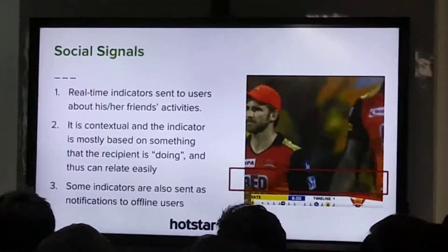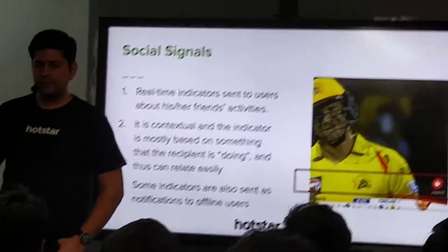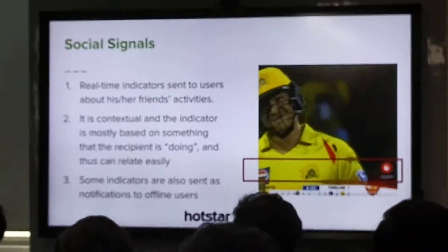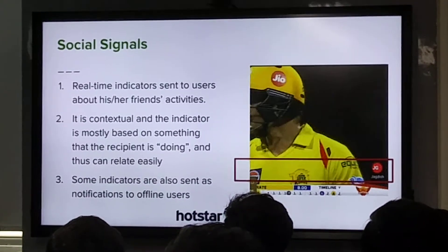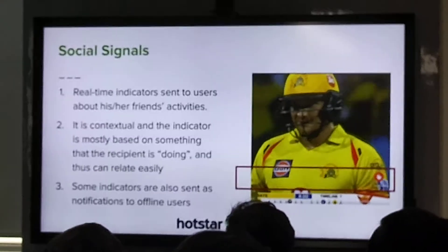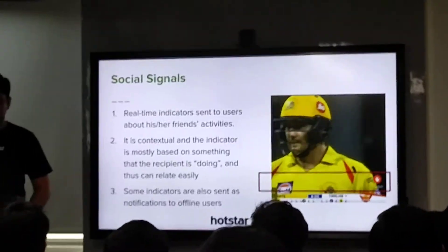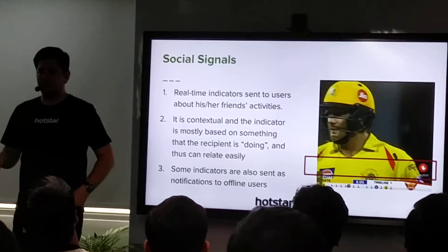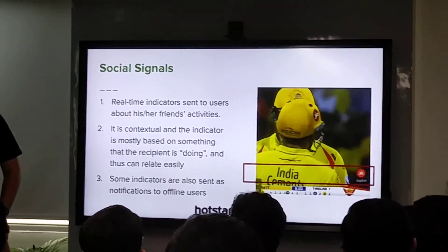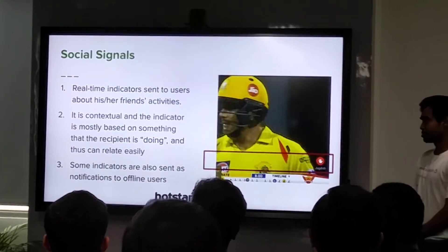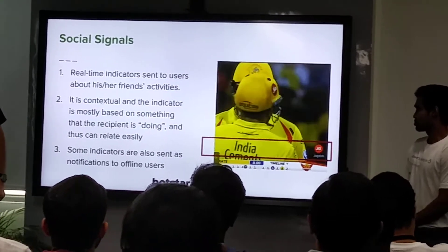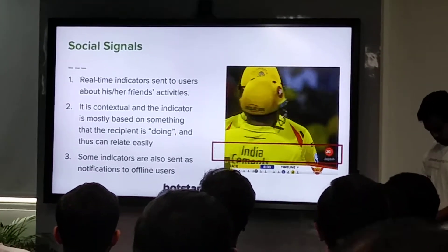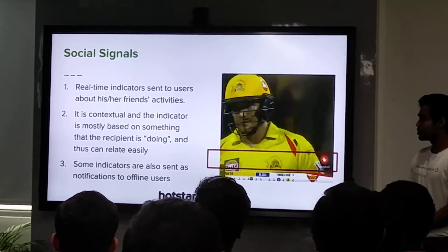These are the real-time indicators that tell you about what your friends are doing. It can be as simple as your friend also watching the same video, or he won some reward playing the Watch and Play game. This was done on a real-time basis, and when 25 million people are doing it and everyone has at least hundreds of friends, you have to notify all those people what their friend is doing. For example, it says your friend has joined or is waving at you, and you can reply back.